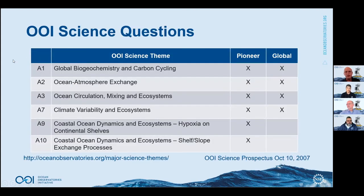The OOI was predicated on a series of science themes, high-level concepts. Those were broken down into 10 different actionable science questions. Six of them, numbered on the left-hand side, are particularly relevant to the CGSN infrastructure. They are interdisciplinary in nature and cover the air-sea interface to the water column and the sea floor below, addressed by different aspects of our infrastructure as shown with the check marks on the right.